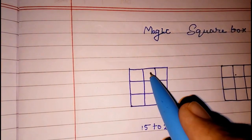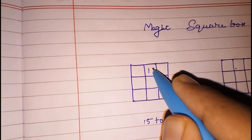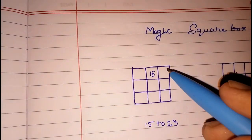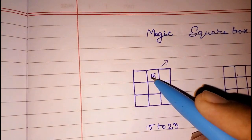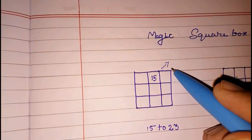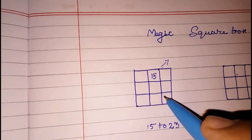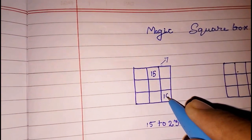We have to start with this first middle box, 15, then we have to move in this direction. But here there is no box so we have to go back here, we will keep it here, 16.